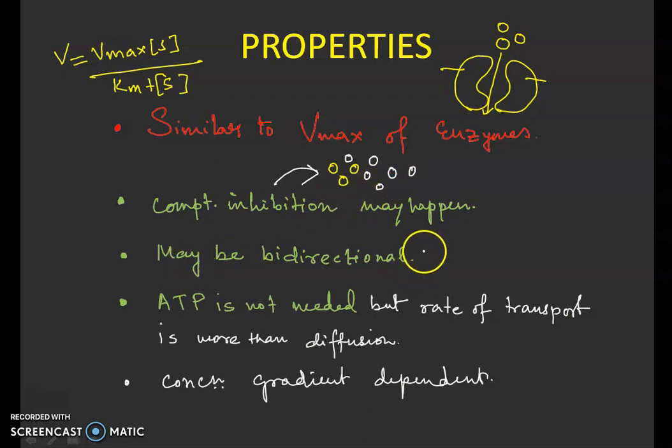It can be bidirectional, but most of the cases in ping-pong state it is unidirectional. ATP is not at all required for the entire process, but remember this rate of facilitated diffusion is more than the normal rate of diffusion, and concentration gradient is a very important factor.